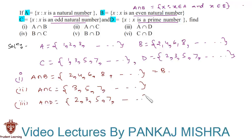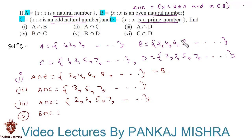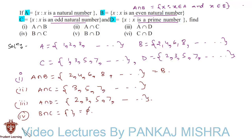Next, in the fourth section, we have to find B intersection C. B is a set of even natural numbers and C is a set of odd natural numbers, so there will be no common elements between these two sets. Therefore, B intersection C is an empty set, or null set.